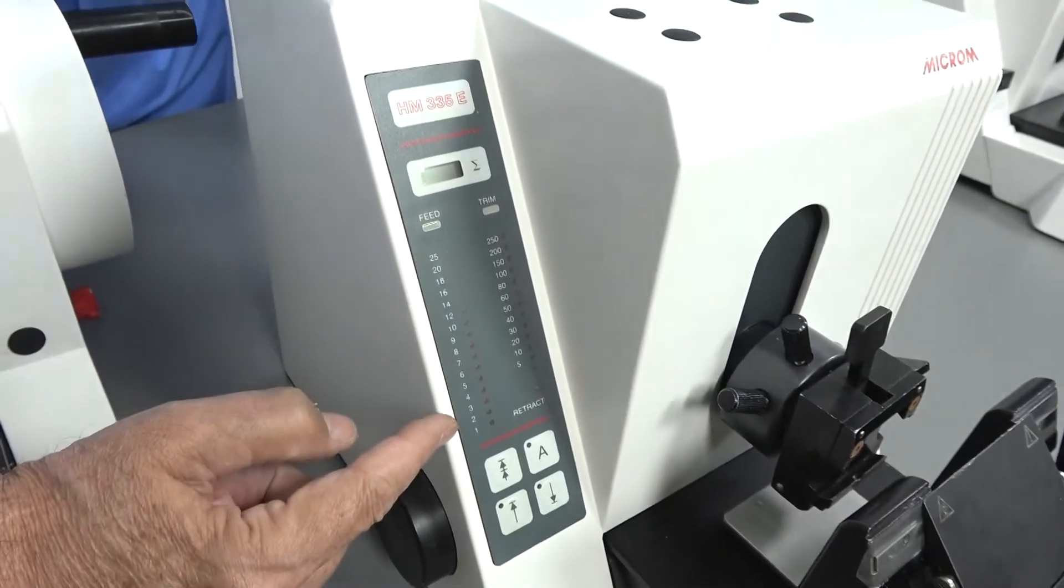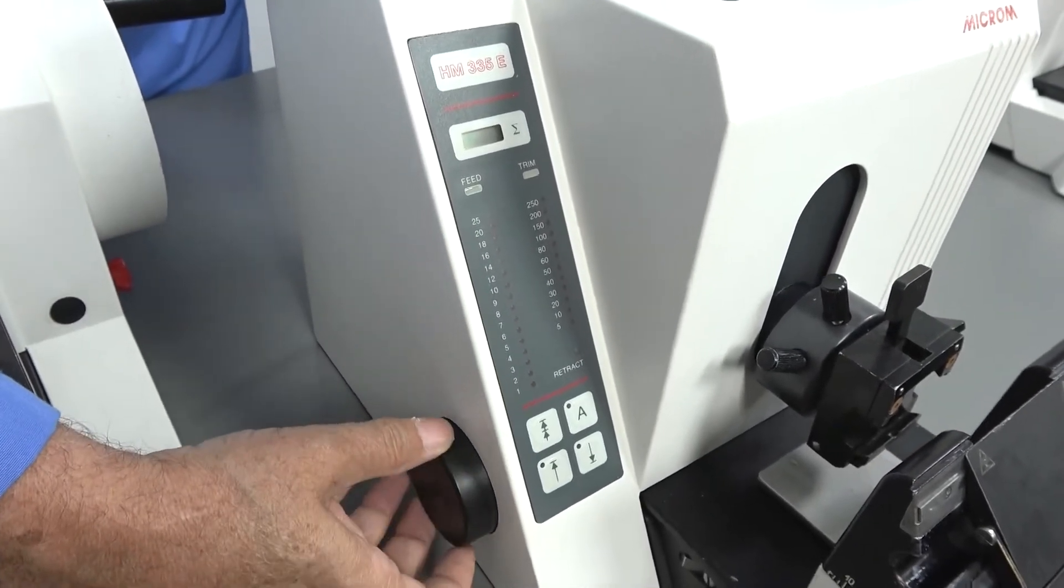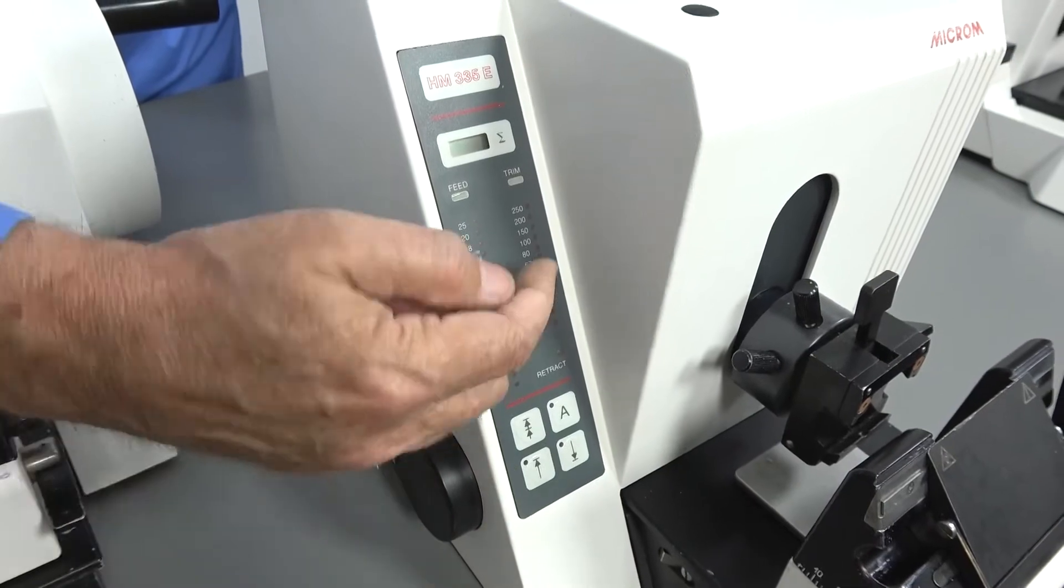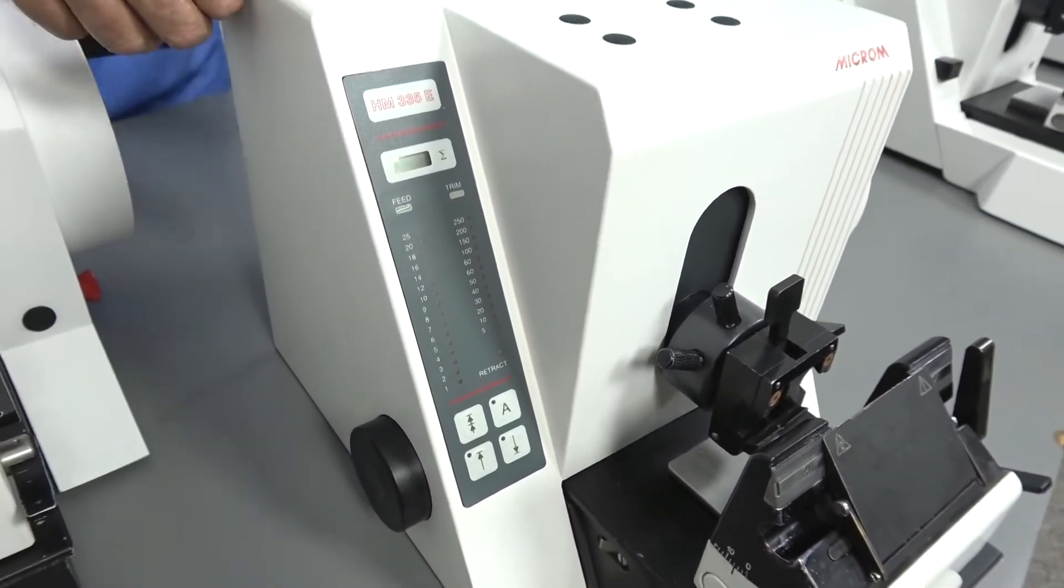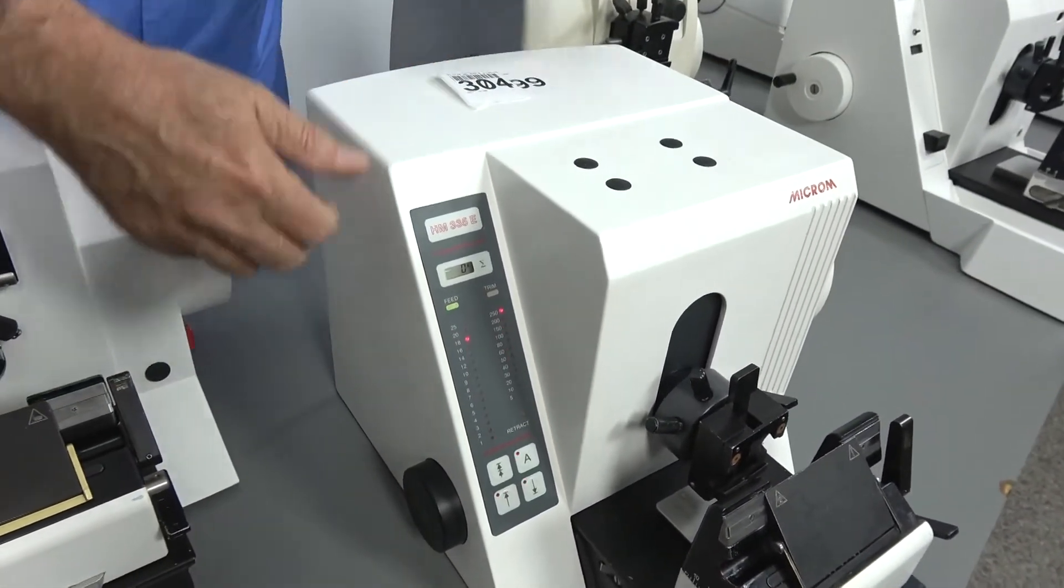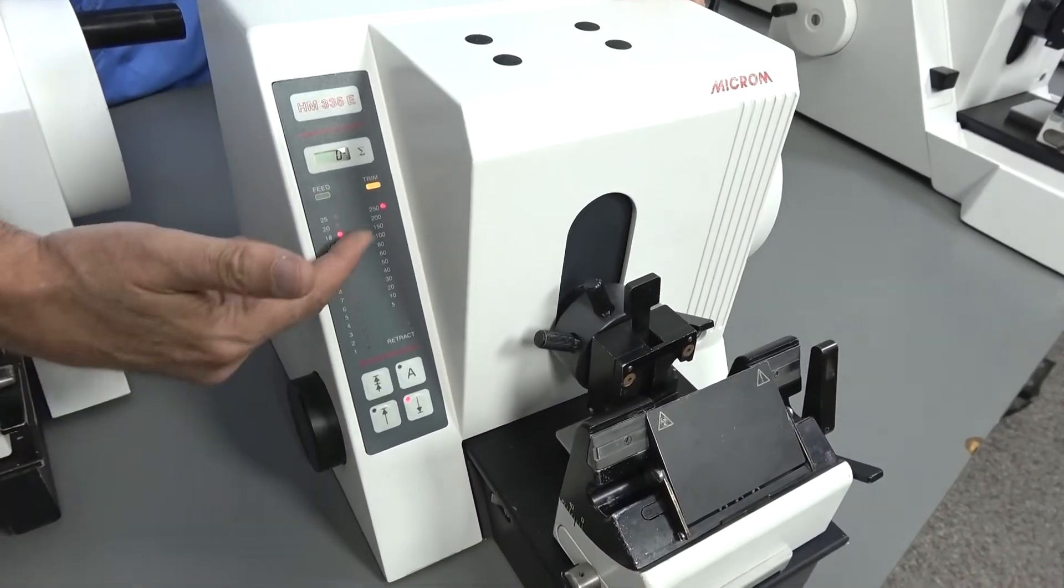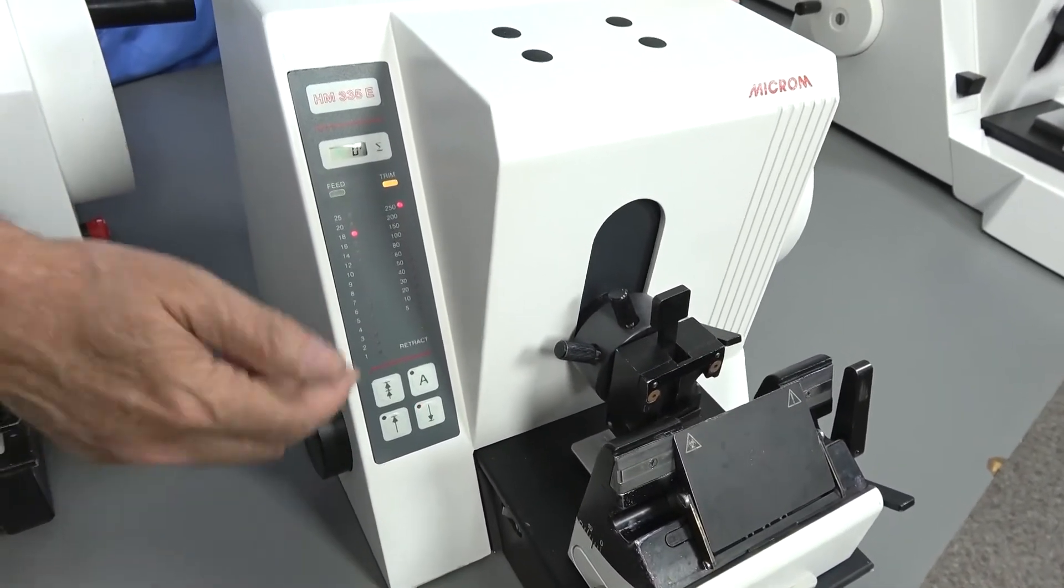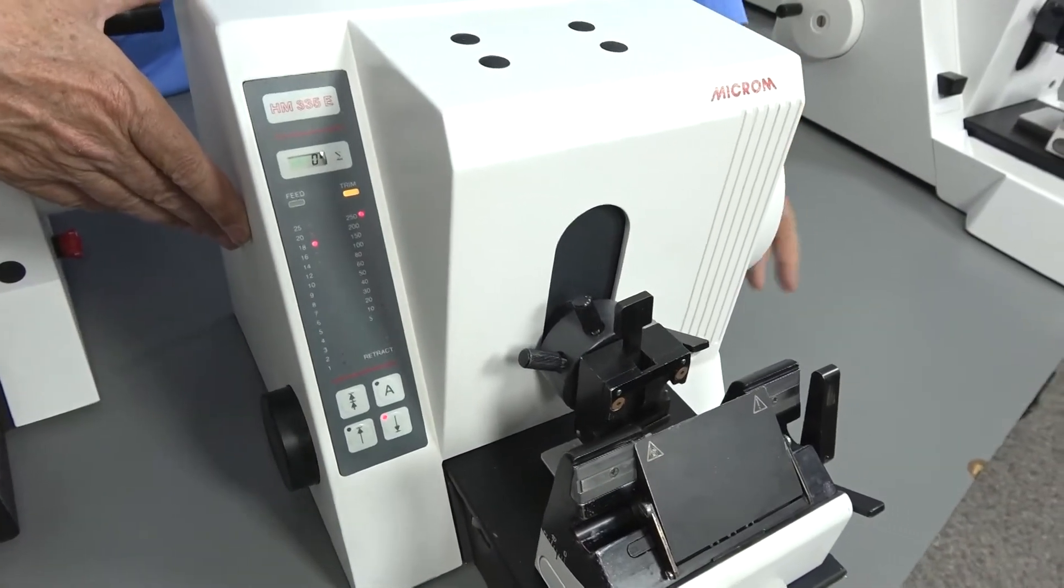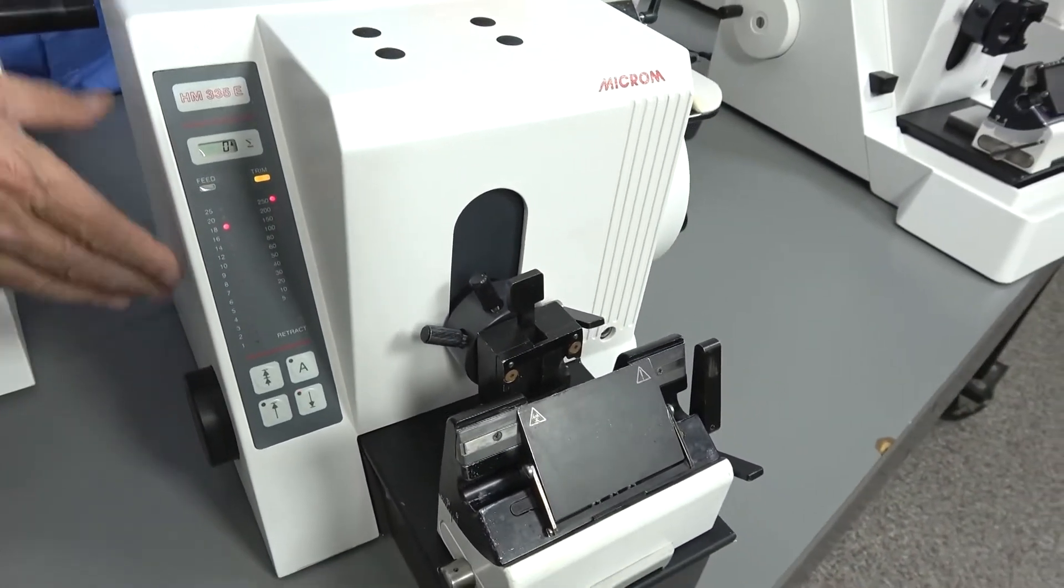It's digital here, so you can change your feed and trim, change to which menu you're going to be going on either side. And I've probably been pushing on the button and the system's not been on. So when you push your button, you change from your feed to your trim. When you turn the wheel, it's going to advance that amount.